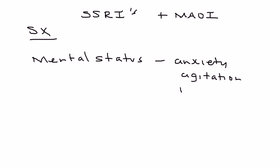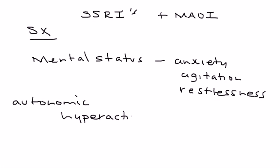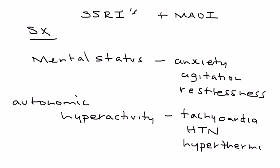You have autonomic symptoms, particularly autonomic hyperactivity. Those symptoms include increased heart rate or tachycardia, increased blood pressure or hypertension, fever or hyperthermia, sweating or diaphoresis, and shivering. You can also have neuromuscular hyperactivity with symptoms including tremor and muscle rigidity.